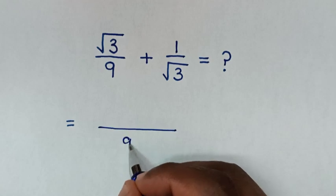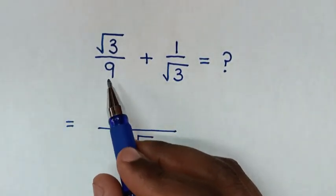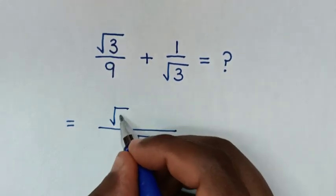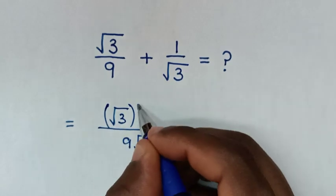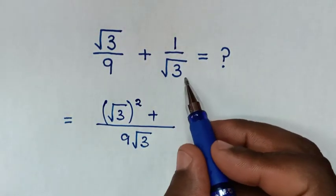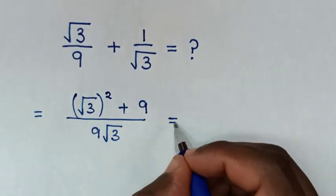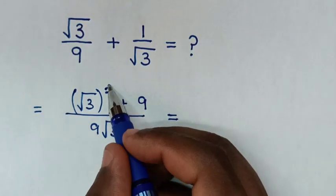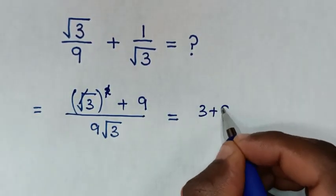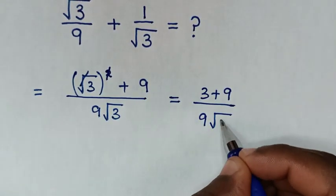It will be over 9 square root of 3. Then 9 square root of 3 divided by 9 is square root of 3. Square root of 3 times square root of 3 is square root of 3 squared. Plus, 9 square root of 3 divided by square root of 3 is 9. 9 times 1 is 9. Then it will be equal to — this square will cancel with this square root, so it will be 3 plus 9, over 9 square root of 3.